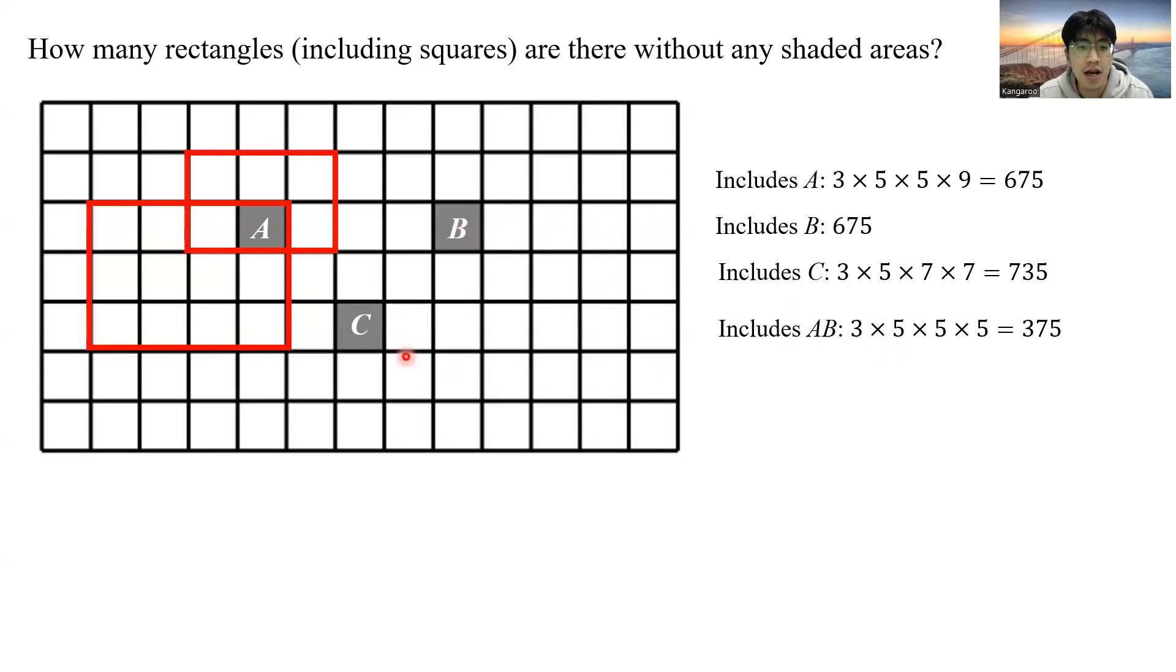Five lines to the right, one, two, three, four, five. And to the bottom, one, two, three, four, five. So we have 375 such rectangles containing both A and B.